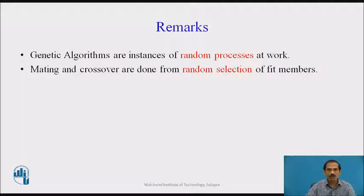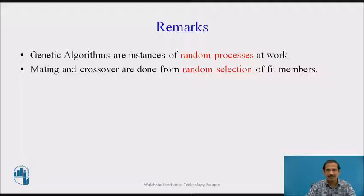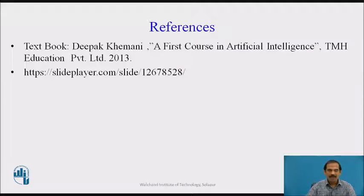Genetic algorithms are instances of random processes at work. Randomization is established at selection, in the probability-based orientation of crossover and mutation, and in the roulette wheel selection of individuals for mating. Randomization also drives the search for the best optimized objective function to be established in a particular chromosome. Mating and crossing are done at random selection to produce more fit members, confirming that genetic algorithms are an optimization process applicable across many domains.